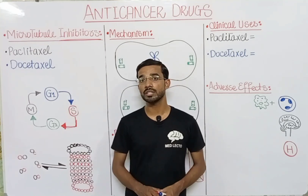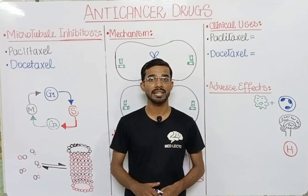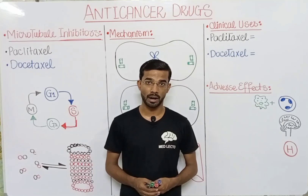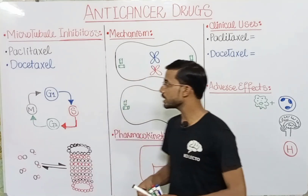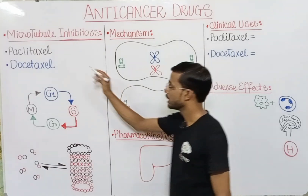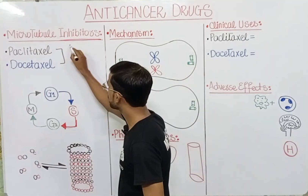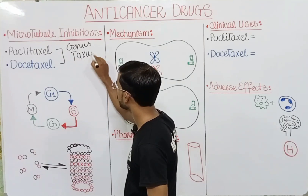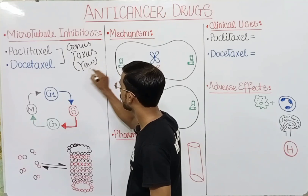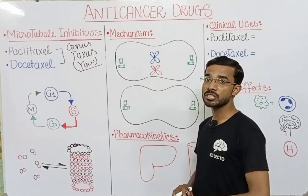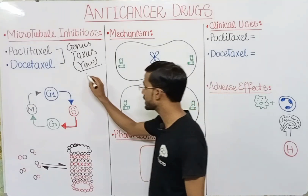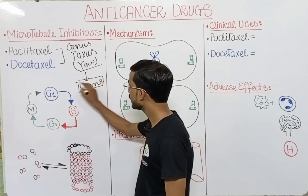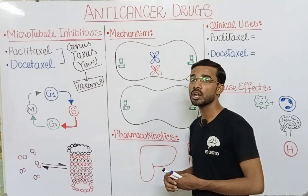Now we are going to discuss two most important microtubule inhibitors: paclitaxel and docetaxel. These drugs are derived from the plant genus Taxus. That is why we call these drugs members of the taxane family — paclitaxel and docetaxel. Semi-synthetic paclitaxel is also available in the market.